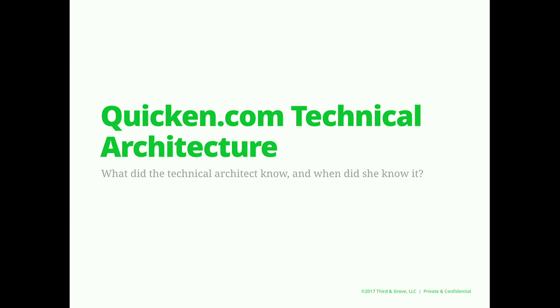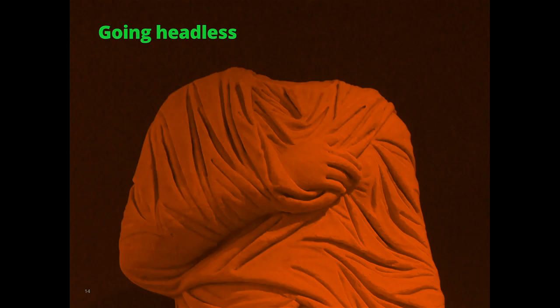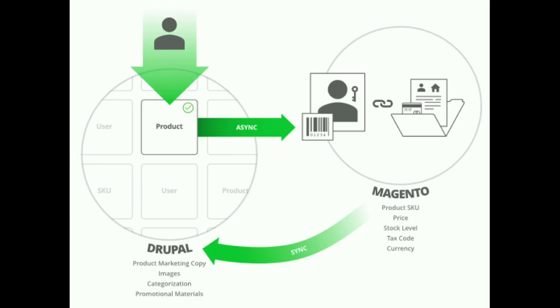Technical architecture: why did we go headless and what does it actually look like? The architecture we used is headless Magento. Drupal serves every interaction to the glass and it communicates to Magento as it needs to via an API. Magento is never serving a front-end page.